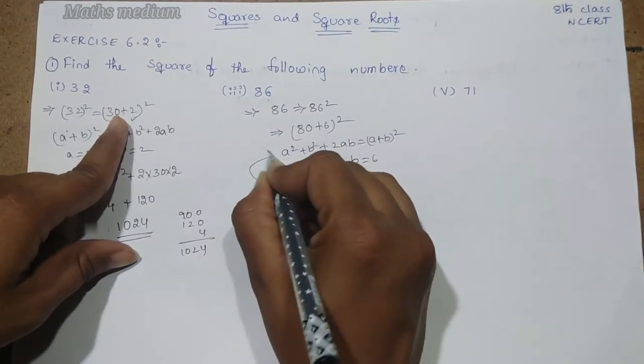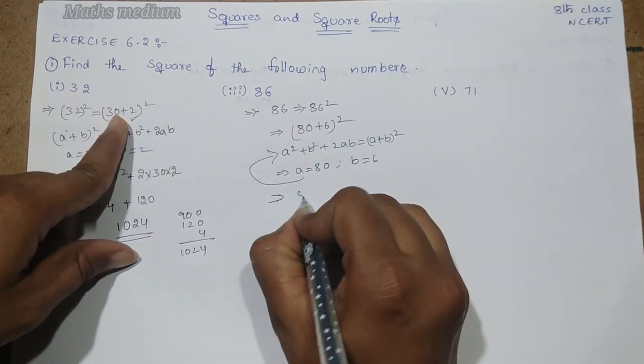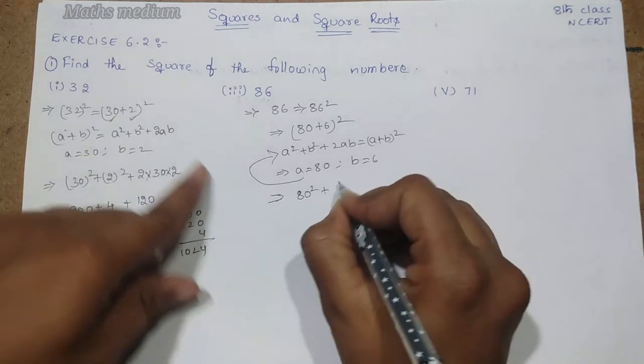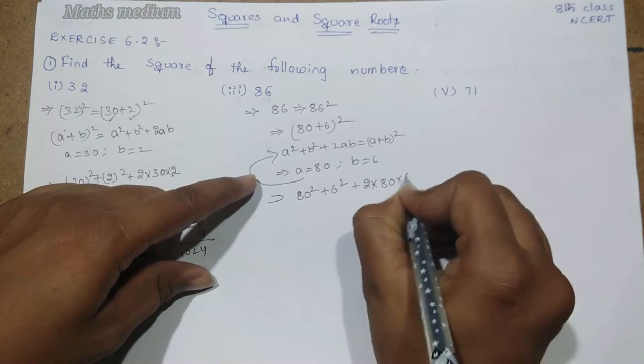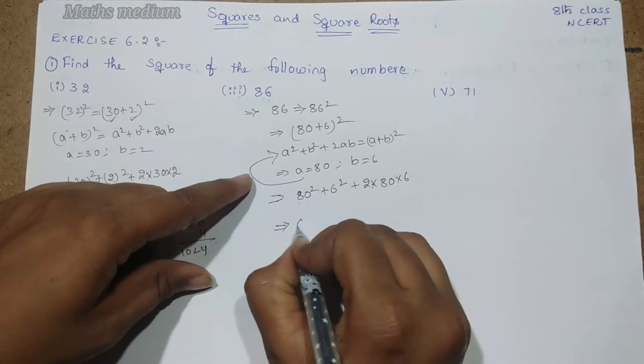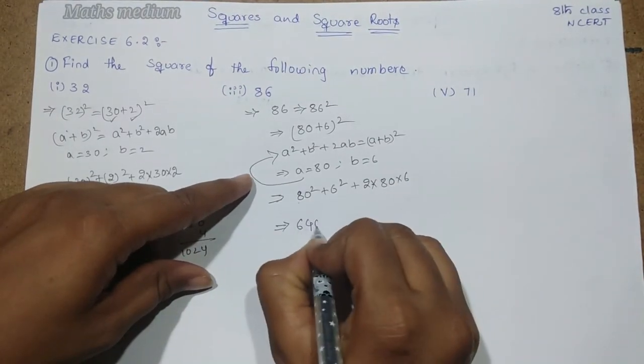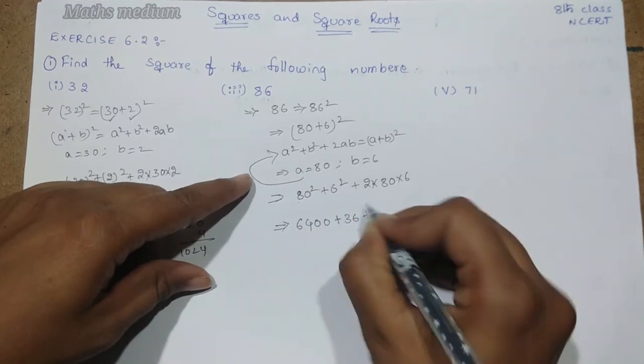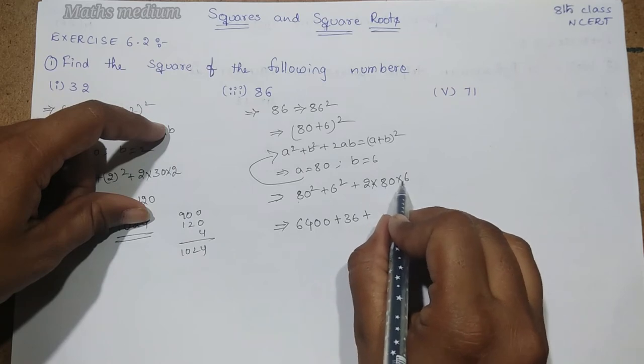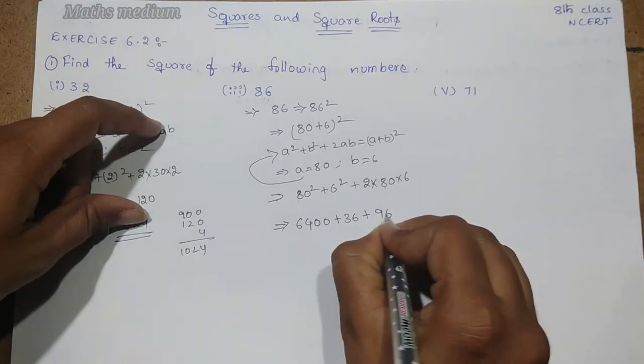Now, apply these two values: 80 square plus 6 square plus 2 into 80 into 6. This equals 6400 plus 36. Two 80's are 160, 160 into 6 is 960.